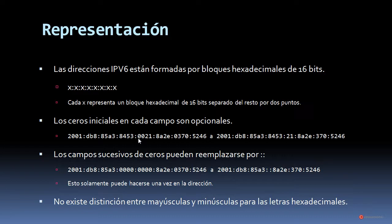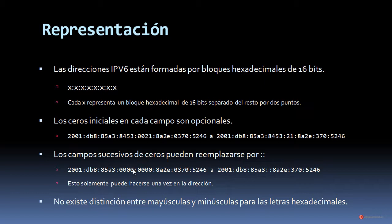Por ejemplo, tenemos un bloque formado por 0021 y aquí tenemos la misma dirección simplificada en la que se han eliminado esos dos ceros. Los campos sucesivos de ceros pueden reemplazarse por dos puntos dobles (::). Aquí tenemos otro ejemplo donde observamos dos bloques seguidos formados por ceros, y hemos simplificado esos dos bloques por esos dos puntos dobles. Estos dos puntos dobles resumen todo ese conjunto de bloques.